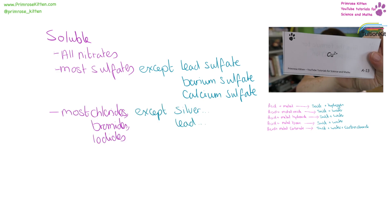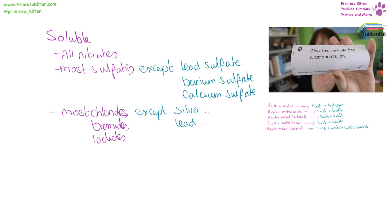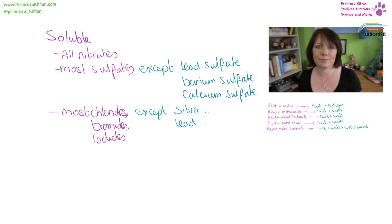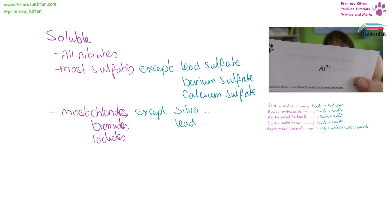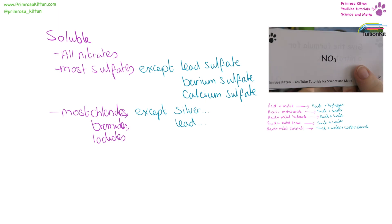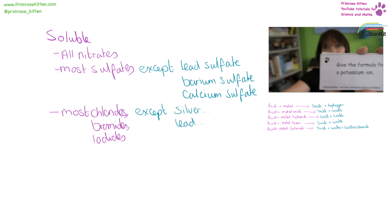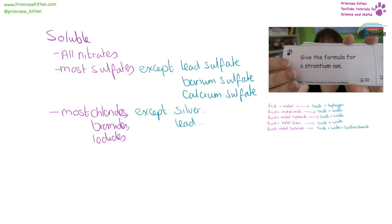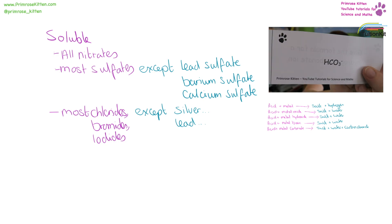Most halogen compounds — so most chlorides, bromides, and iodides — are soluble, except when they're combined with silver or lead. For example, silver chloride, silver bromide, and silver iodide are insoluble. Lead chloride, lead bromide, and lead iodide are also insoluble.